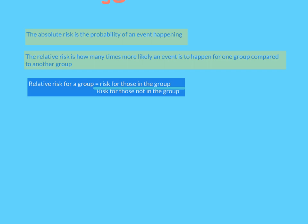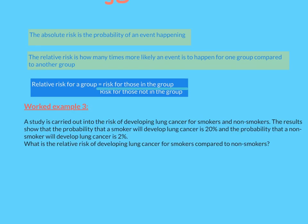Let's look at our worked example. Worked example 3: A study is carried out into the risk of developing lung cancer for smokers and non-smokers. The results show that the probability that a smoker will develop lung cancer is 20% and the probability that a non-smoker will develop lung cancer is 2%. What is the relative risk of developing lung cancer for smokers compared to non-smokers? So relative risk is the risk for those in the group divided by the risk for those not in the group. So the relative risk is 20% divided by 2%, well that's just 0.2 divided by 0.02, 20% and 2%, which is 10.